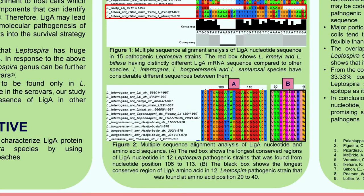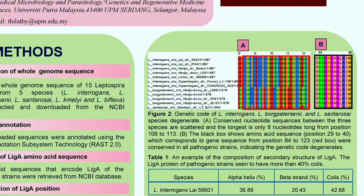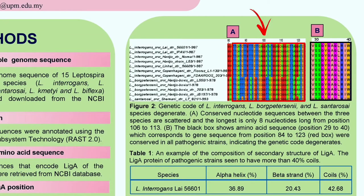Figure 2 shows the multiple sequence alignment analysis of LiA nucleotide and amino acid sequences. The red box shows the longest conserved regions of LiA nucleotide, meanwhile the black box shows the particular species of LiA nucleotide. This figure shows that Leptospira interrogans, Borgpetersenii, and Santarosai degenerate from position 84 to 123. The conserved nucleotide sequences between the three species are scattered, while the black box shows the amino acid sequence corresponding to the gene sequence in the red box. This is called Genetic Code Redundancy, where a single amino acid may be coded by more than one codon.